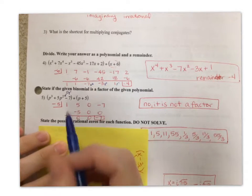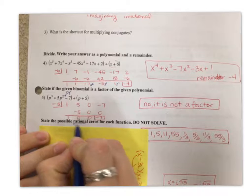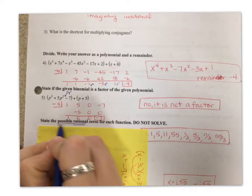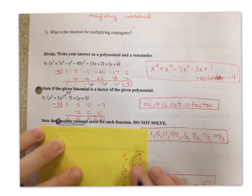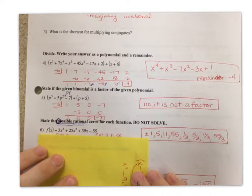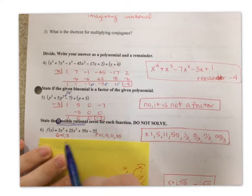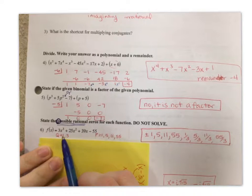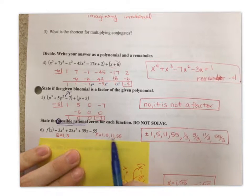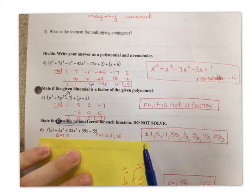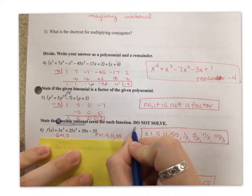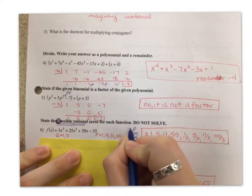Okay. Next problem, it says state the possible rational roots. Possible should make you think p's and q's. All right. So we're going to do p at the end, q in the front. We list all our numbers that we can use to multiply to give us those. And then we just need to make fractions. And remember, it's p over q, plus or minus.